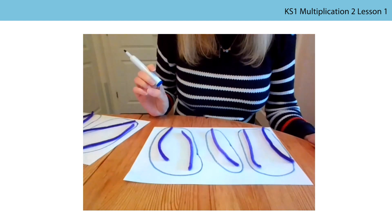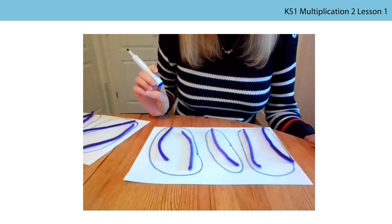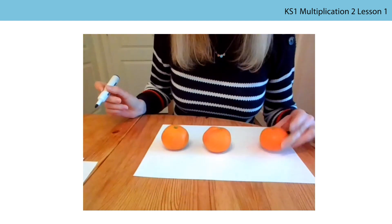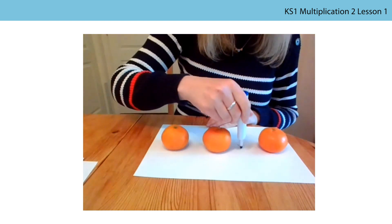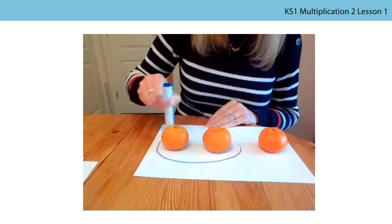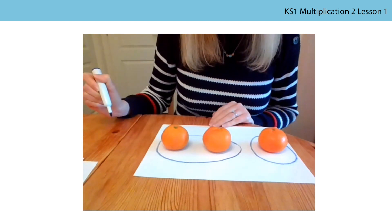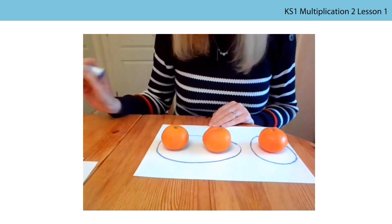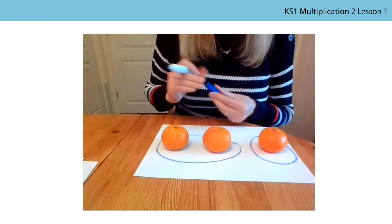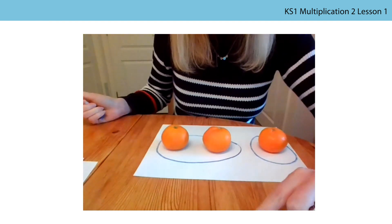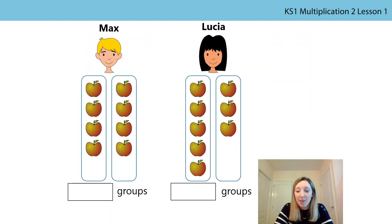I have some pipe cleaners. They have been grouped. Let me try with one more object — I have some oranges. The oranges have been grouped. Your turn now. Have a little go at grouping your objects by drawing around them. I hope you enjoyed grouping your objects by drawing around them — just move them to one side for me, please.